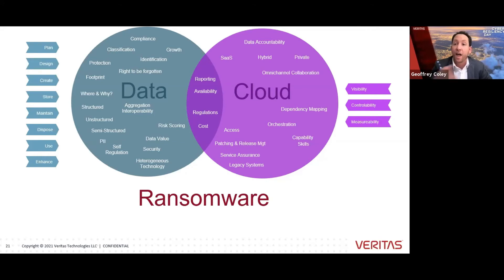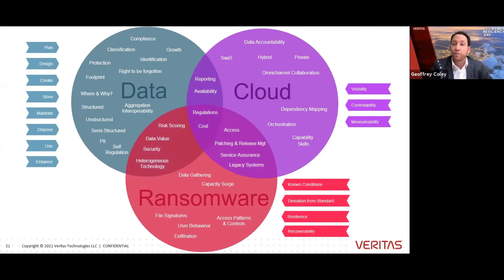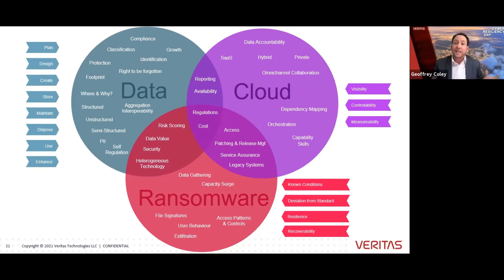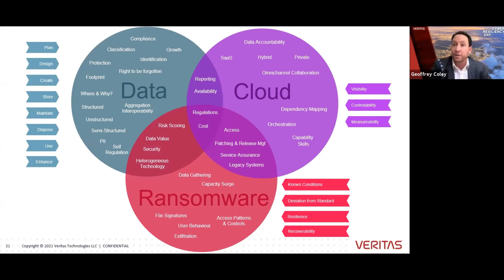How do we map recovery point and recovery time objectives? The cloud itself definitely fails. Who's accountable for my data? Again — that would be you. Lastly, to ransomware: in only a few short years, ransomware attacks have evolved from being largely indiscriminate, casting a wide net of victims, to focusing on gaining privileged access to explore, disrupt, and infiltrate critical systems. This results in targeted attacks and higher ransoms.